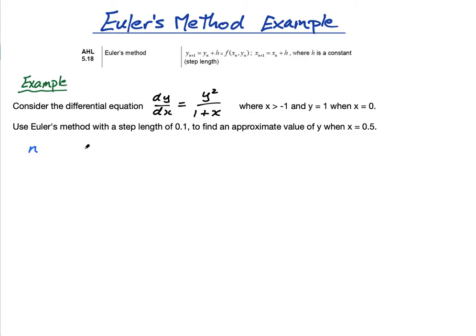So, I have n, I have x_n, and then I have y_n, which is the one that's going to need the most space, and I have f(x_n, y_n). Now, remember, that is dy/dx. So, dy/dx equals f(x_n, y_n), and that is given here. The differential equation is dy/dx equals y squared over 1 plus x. So, that's what we're going to use to get our different y's.